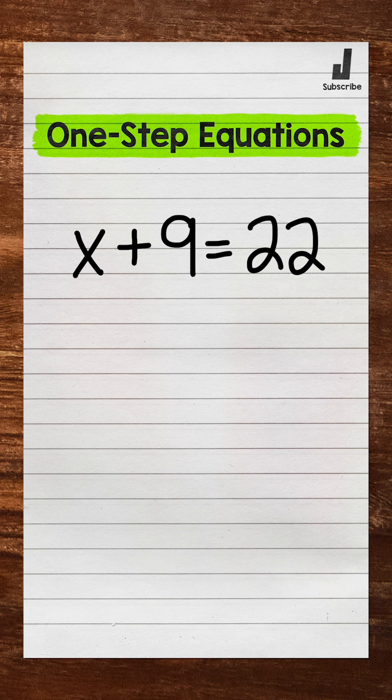We do that by using inverse operations, so opposite operations. We are adding 9 to x, so we need to undo that. The inverse operation of addition is subtraction, so subtract 9 from the left side of the equation.